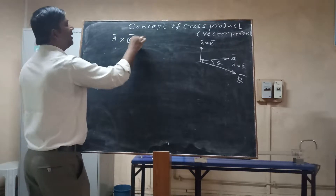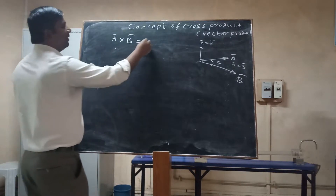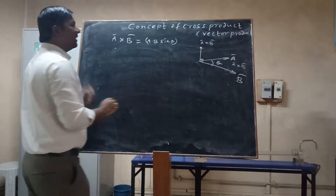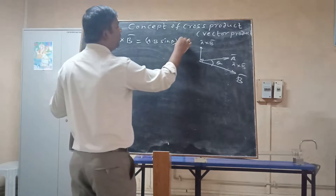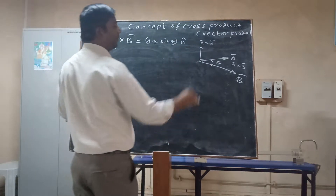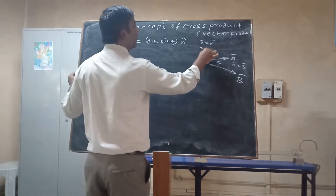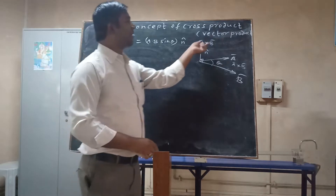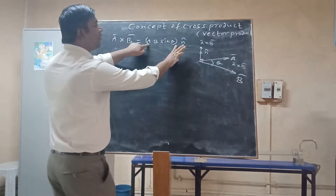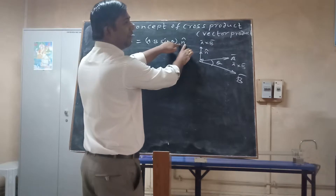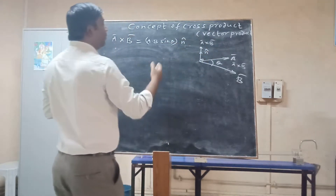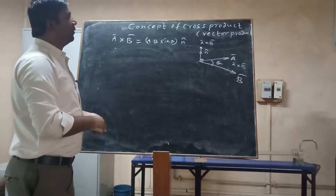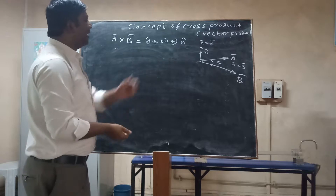By definition, a̅ × b̅ equals a into b into sinθ, multiplied by a unit vector n̂. This n̂ is a unit vector along the direction of a̅ × b̅. The magnitude of a̅ × b̅ is a scalar quantity, and multiplying it by the unit vector n̂ gives us a vector output — the vector product.